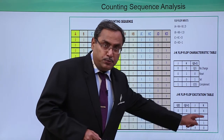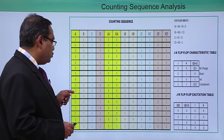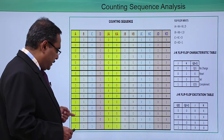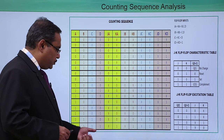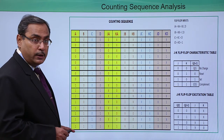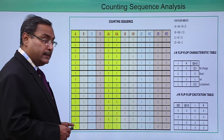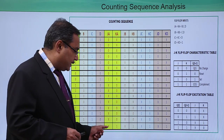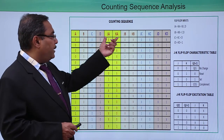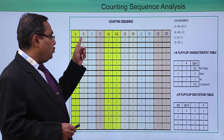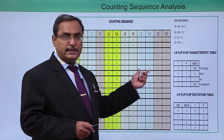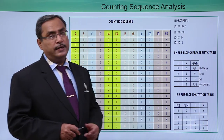A 0-to-1 transition requires input 1x; 1-to-1 means x0; and when the output changes from 1 to 0, the input should be x1. In this way I have filled up the JA/KA column. Similarly, looking at B gives JBKB, and looking at C and D we fill up JCKC and JDKD respectively.